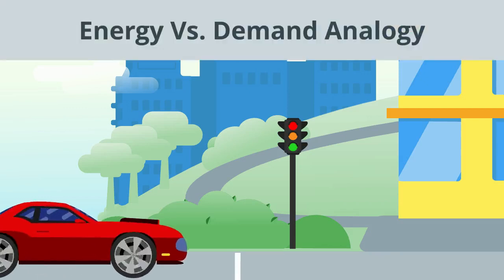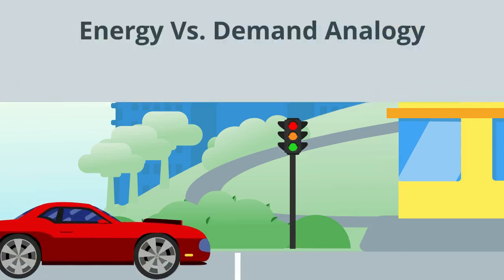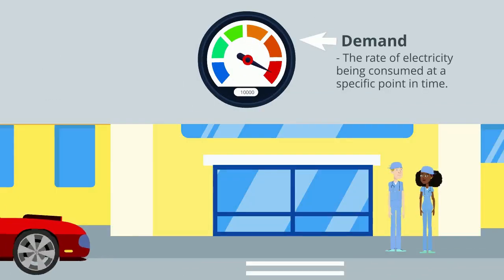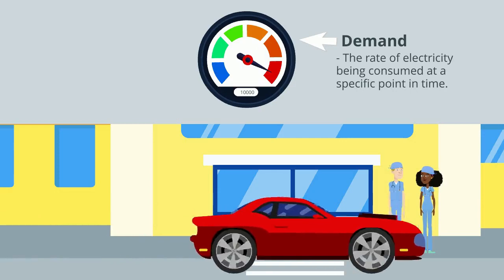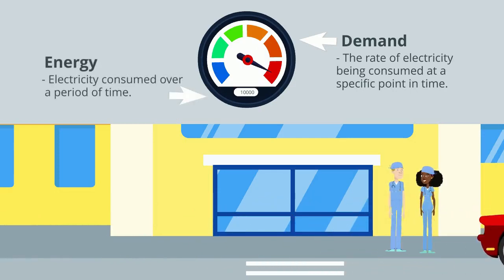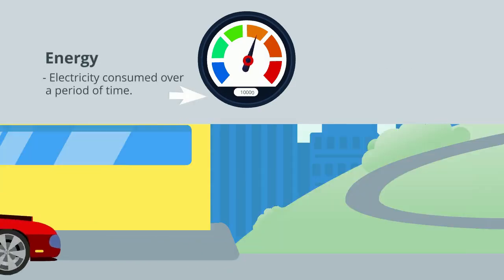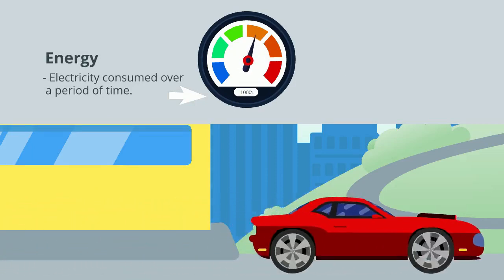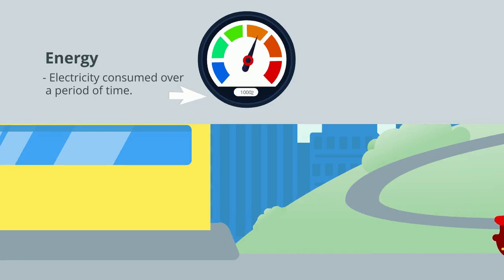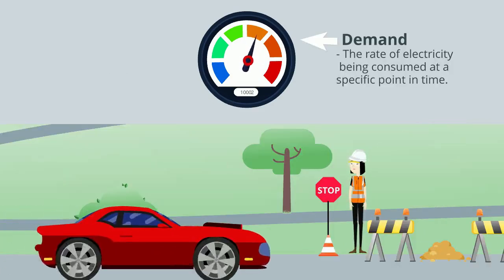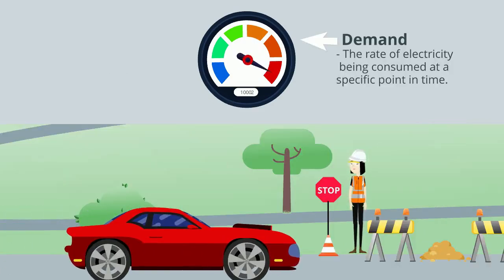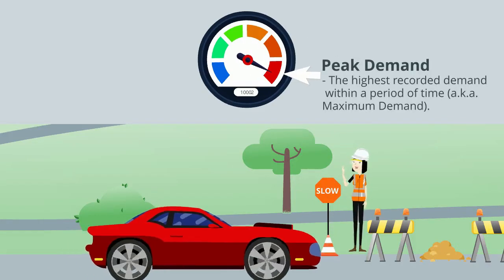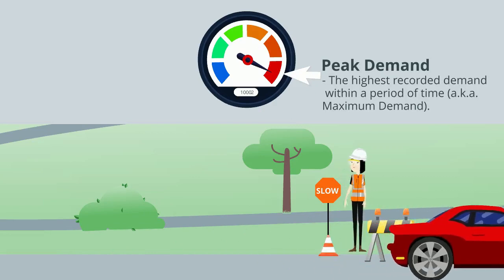Understanding the difference between the two will help a company follow their electric bill and usage. Imagine the dashboard of a car. In this analogy, speed is like demand, while energy is like the distance traveled. As you know, if the car is traveling, the odometer is turning — the higher the speed, the faster the odometer turns. The speedometer will record many speeds during a drive, yet when it is over, imagine the needle settling on the fastest speed traveled during the whole trip.